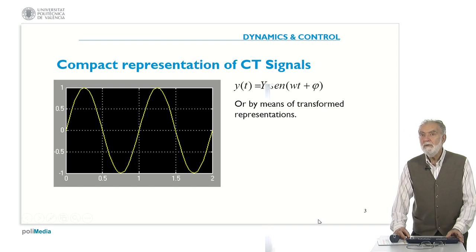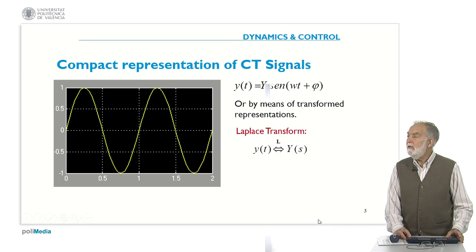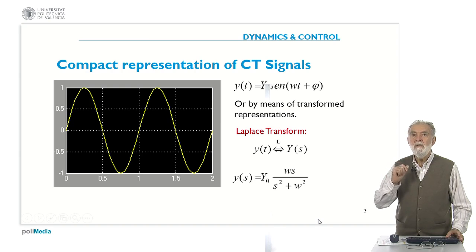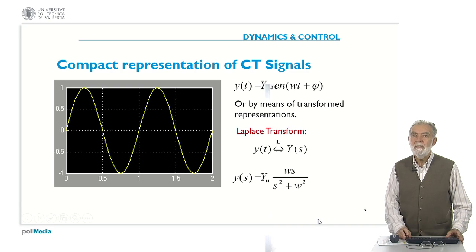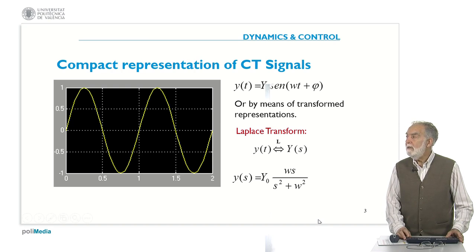So you can also use some kind of transformation. Instead of being a representation in the time domain, like on the screen, you can use something which is called the Laplace transform, which is transforming one signal of time into a signal of another variable, which is called the Laplace variable, the complex Laplace variable s. In that case, the same signal instead of y of t is represented by y of s equal w times s over s squared plus w squared, times y0.